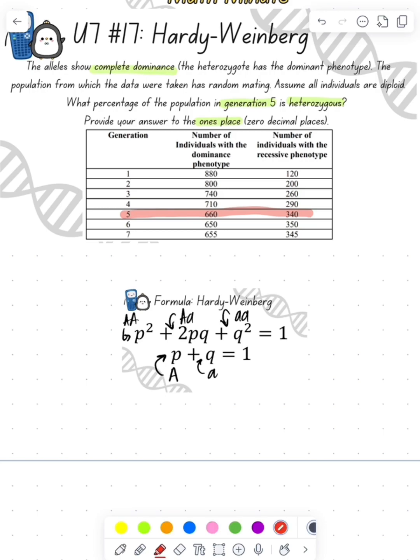The chart tells me the number of individuals that are the recessive phenotype. So that's going to be our Q squared in terms of that's the number out of the total population.